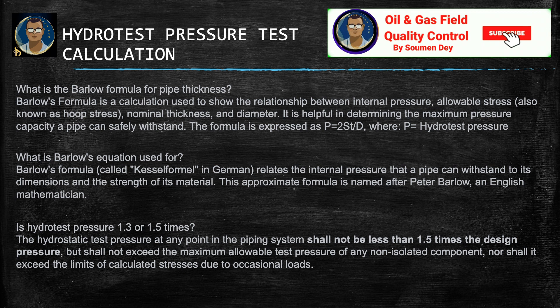For hydrostatic testing of piping designed for internal pressure, the maximum hydrostatic test pressure at any point in the system shall not be less than 1.5 times the design pressure.